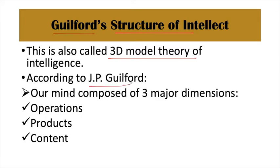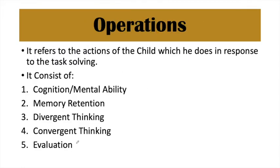J.P. Guilford gave this theory. According to him, our intelligence depends on three major dimensions or parameters: number one is operations, number two is products, and number three is contents. Operations refers to the actions a child performs when going to solve a problem — how they approach and solve the task. Under operations comes cognition, where they use their mental ability for problem solving.